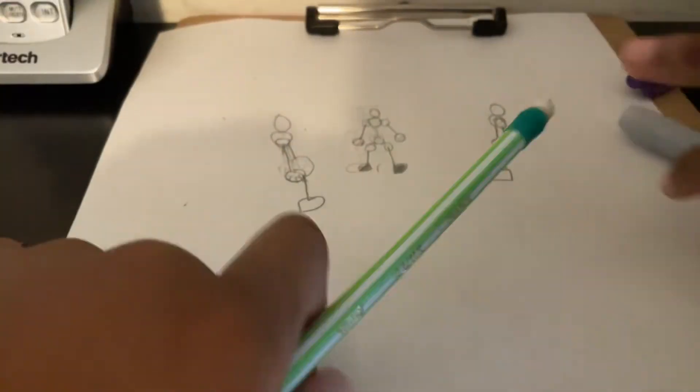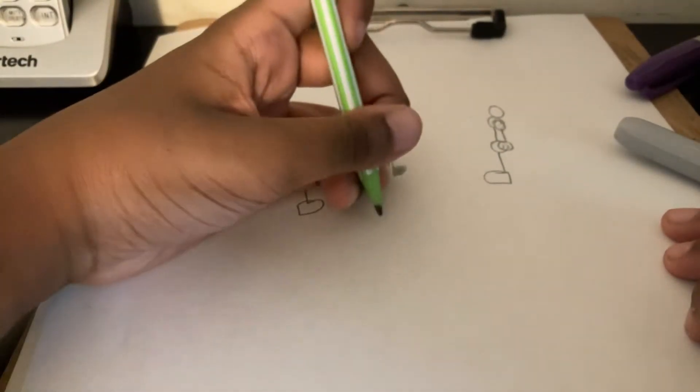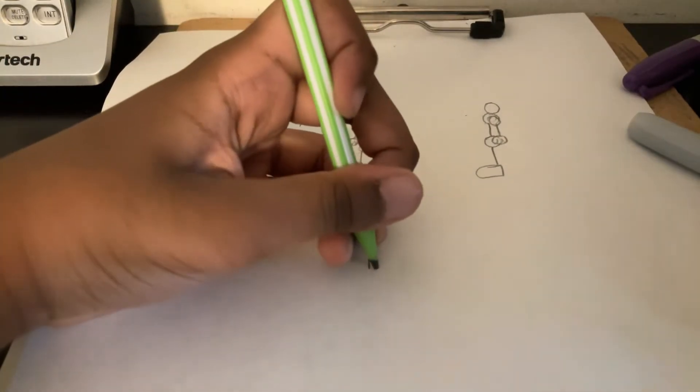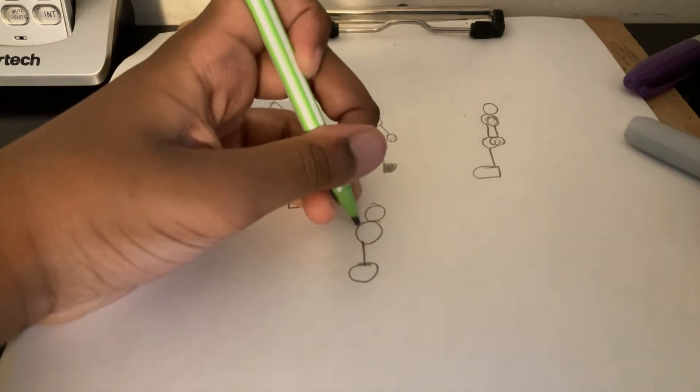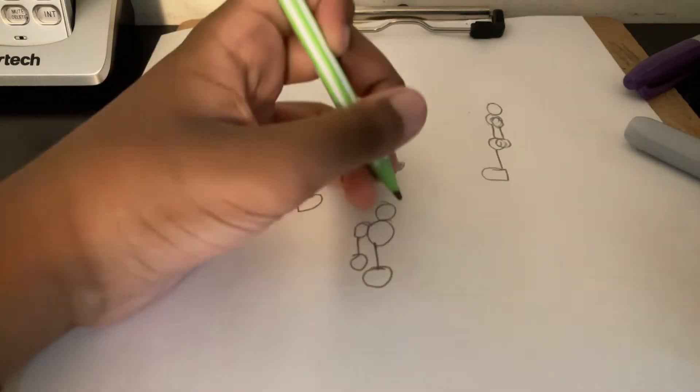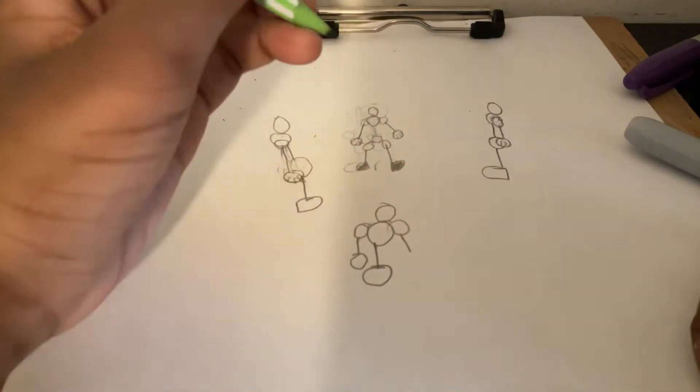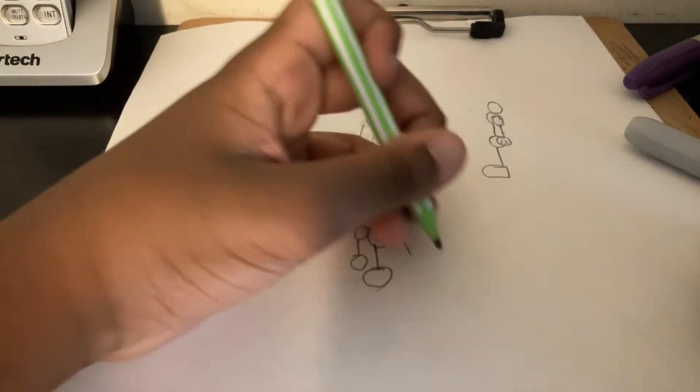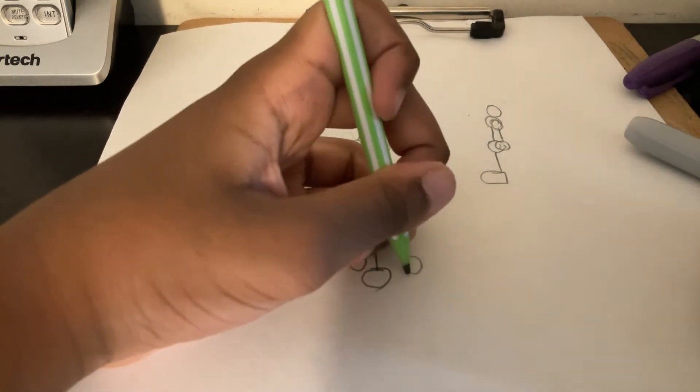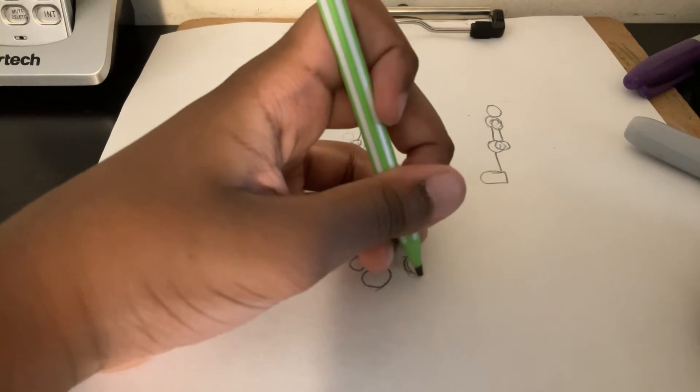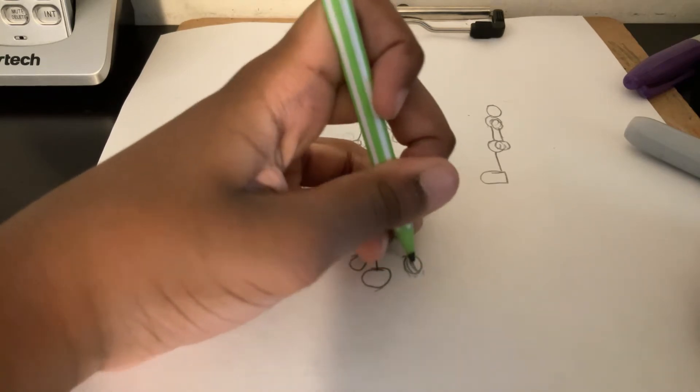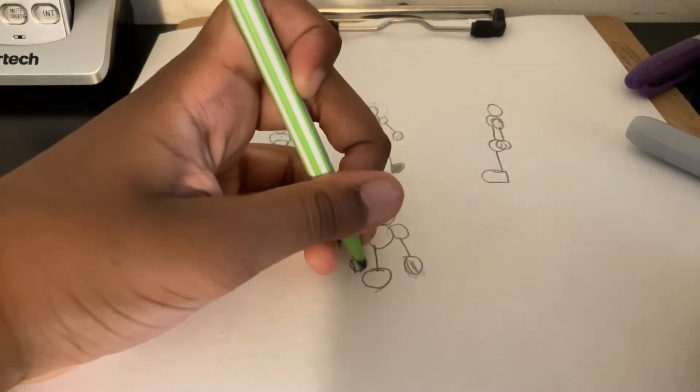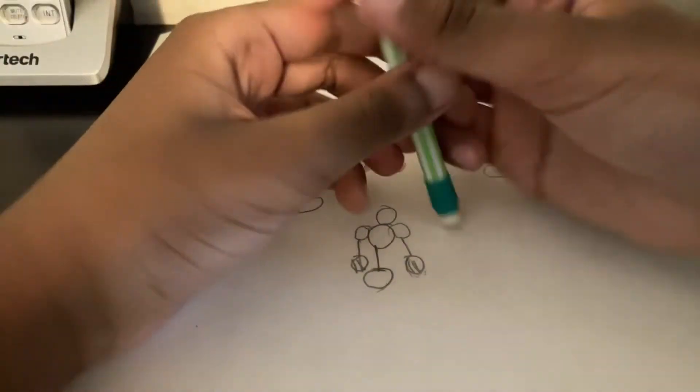So we got the character. Now we want to look at the back. Remember, you don't have to draw this exact character. You can find, you can actually try to have experiments, doing it in different styles. I would not suggest anime, it freaks me out. It really freaks me out.